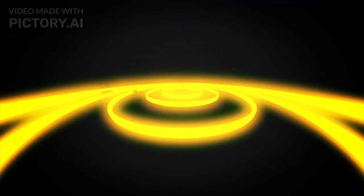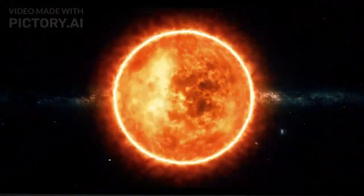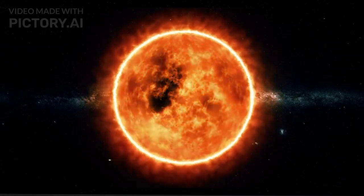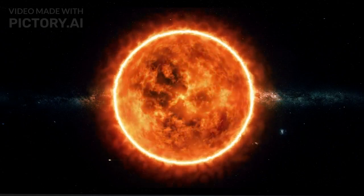Sunspots form when the Sun's magnetic field lines become twisted and tangled due to differential rotation. These sunspots, which appear as cooler, darker patches on the Sun's surface, can produce powerful solar flares and coronal mass ejections, CMEs.